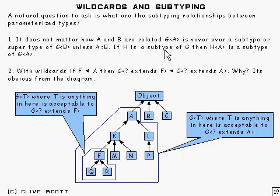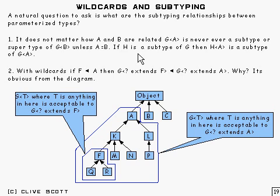as I have already said, if G is a generic type and H is a generic subtype of G, then it does not matter how A and B are related — G of A is never ever a subtype or supertype of G of B, unless of course A and B are the same thing.